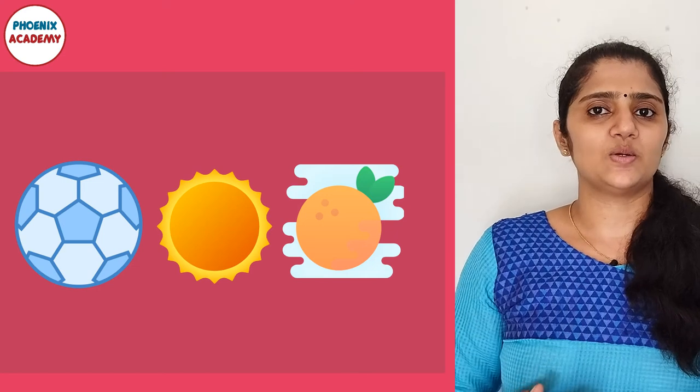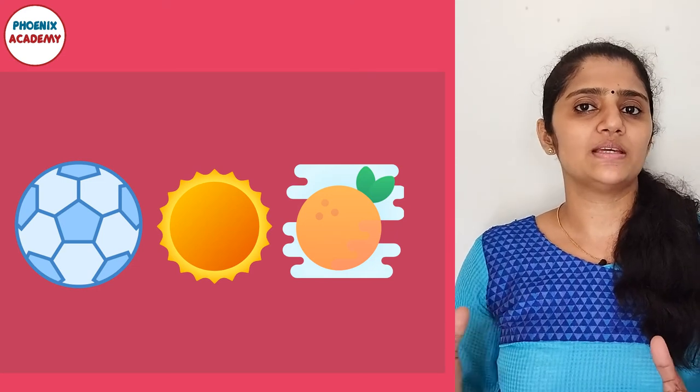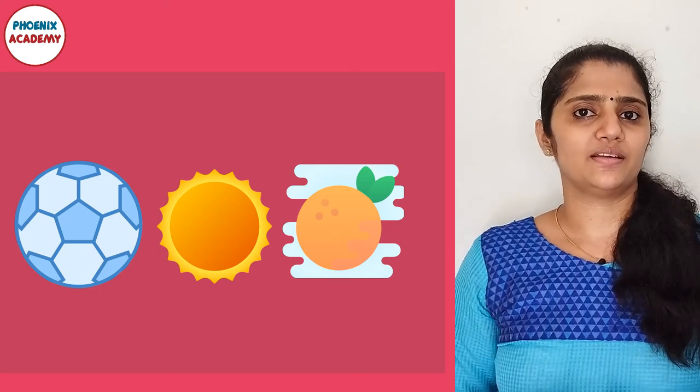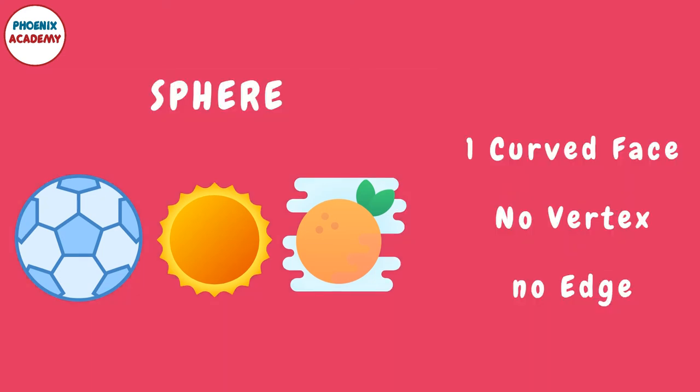Look at the shape of these objects. These objects have the shape of a sphere. A sphere has no vertex and no edges. It has only one curved face.